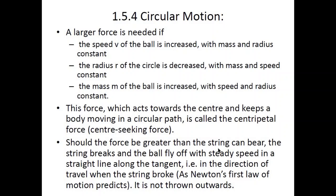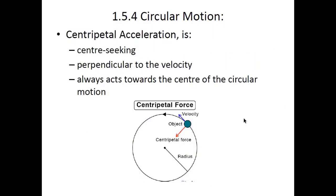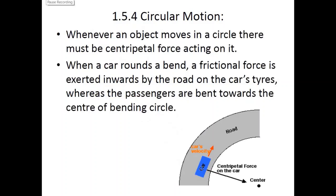The ball would not be thrown outwards — it would not go in any outward direction. It would continue on in a straight path. Whenever an object moves in a circle, there must be a centripetal force acting on it, otherwise it cannot continue in a circular path.